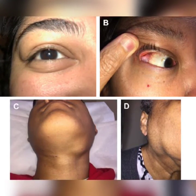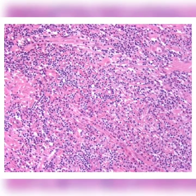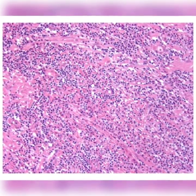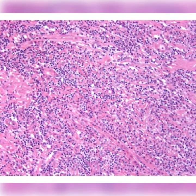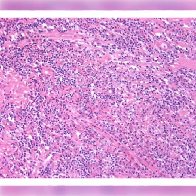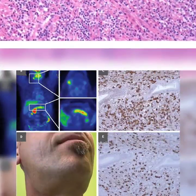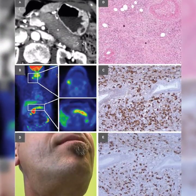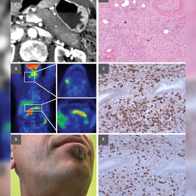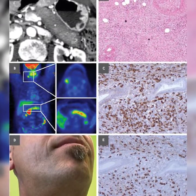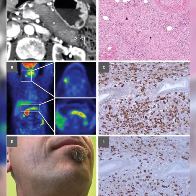Histology features include: 1. Dense lymphoplasmacytic infiltrate — lymphocytes and plasma cells — rich in IgG4-positive plasma cells. 2. Storiform pattern of fibrosis. 3. Obliterative phlebitis.